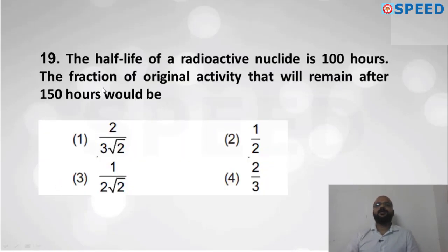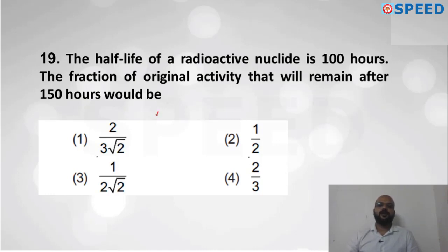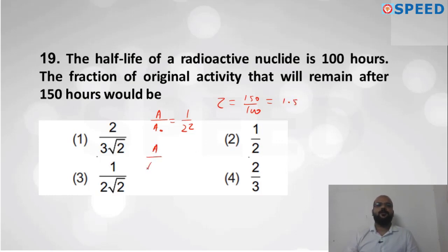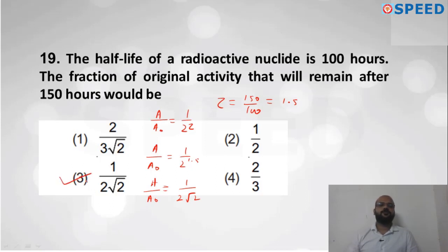Question nineteen: Half-life of radioactive nucleus is 100 hours. Fraction of original activity remaining after 150 hours: A/A₀ = (1/2)^τ where τ = 150/100 = 1.5. So A/A₀ = (1/2)^1.5 = 1/(2√2). Option number 3 is correct.